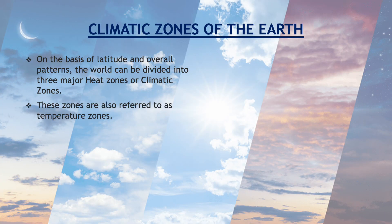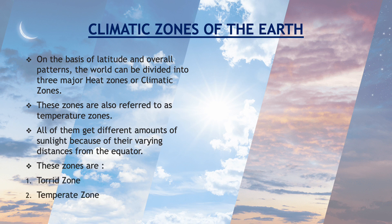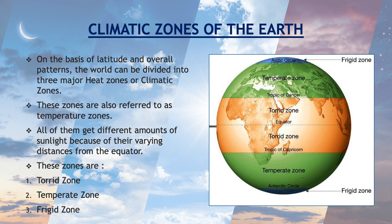Climatic zones of the earth. On the basis of latitude and overall patterns, the world can be divided into three major heat zones or climatic zones. Our whole earth is divided into three zones, which means that we can understand each zone's climate or atmospheric pattern. These zones are also referred to as temperature zones — heat zones, climatic zones, or temperature zones. These zones are torrid zone, temperate zone, and frigid zone.